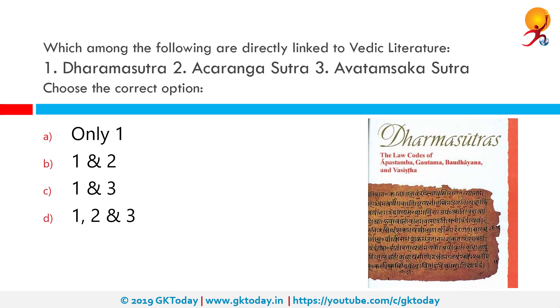Which among the following are directly linked to Vedic literature? 1. Dharma Sutra. 2. Akaranga Sutra. 3. Avatamasaka Sutra.